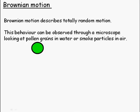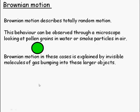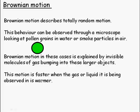He was looking at a pollen grain in water, but you can see the same motion with smoke particles in air. About 100 years later, another guy came along and said that this motion was due to invisible molecules of the gas or liquid bumping into the larger object like the pollen grain or smoke particle, moving it around. He also noted that the hotter the gas or liquid, the faster this random motion was.